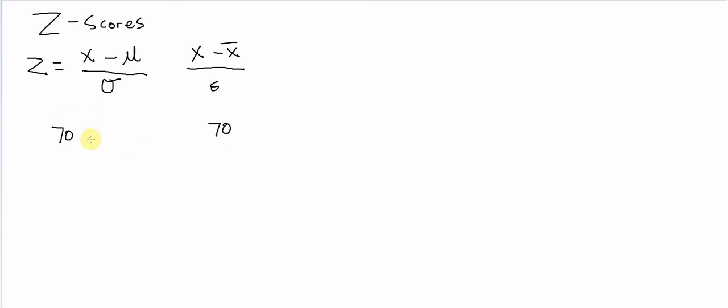So if we say student one here or student A, they got a 70, but their class average was 63 and their class standard deviation was 4.5. And this one who got 70, their class average was 61, but their standard deviation was 5.2.